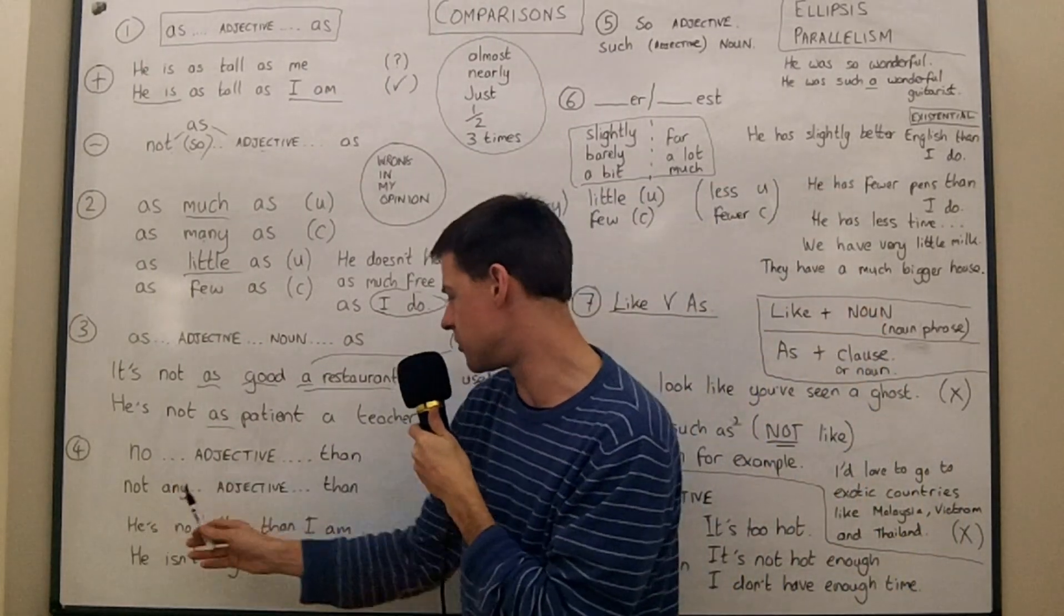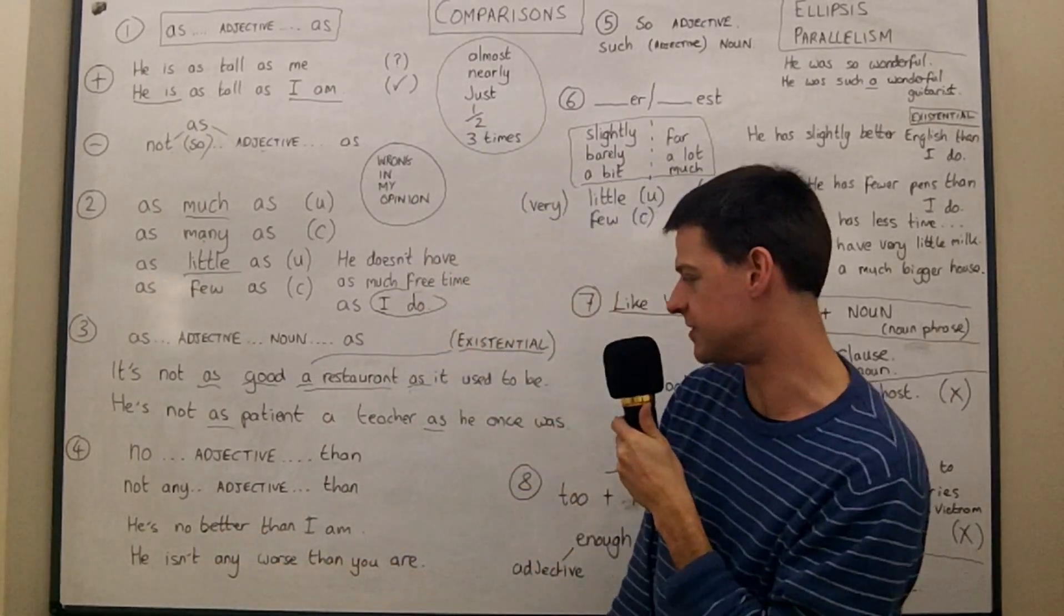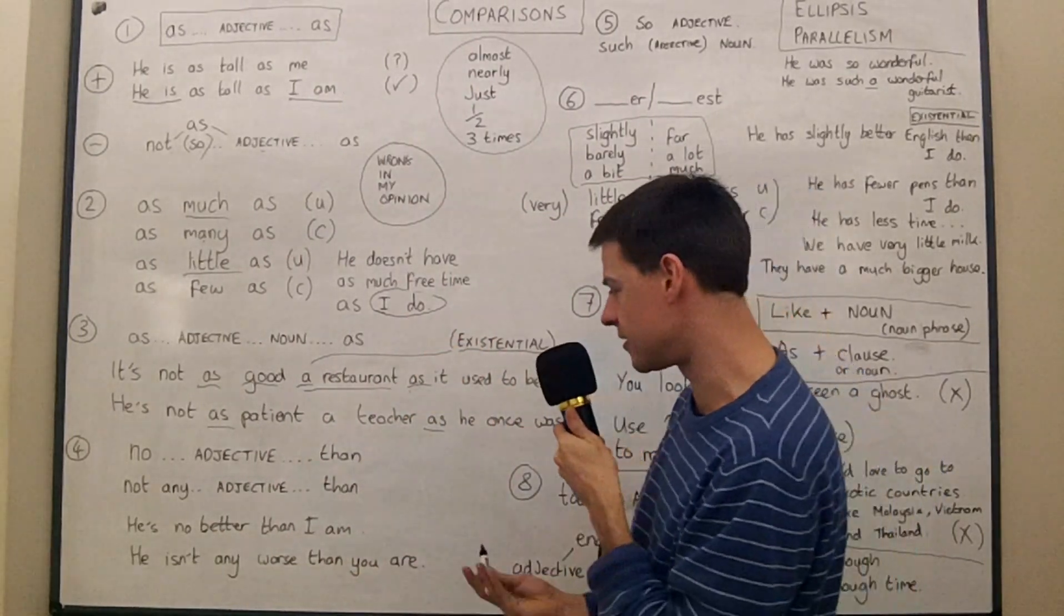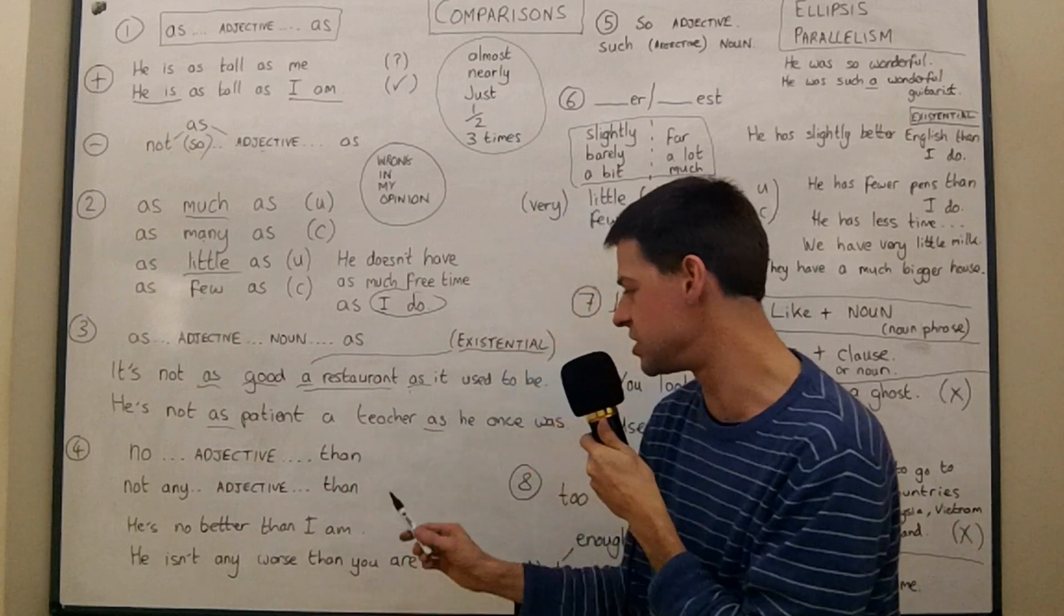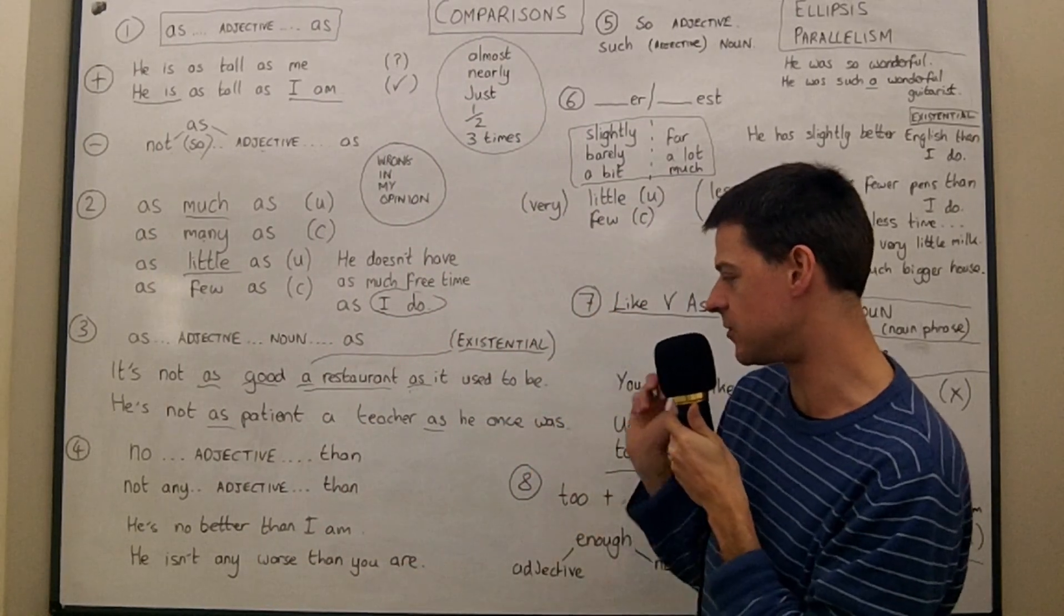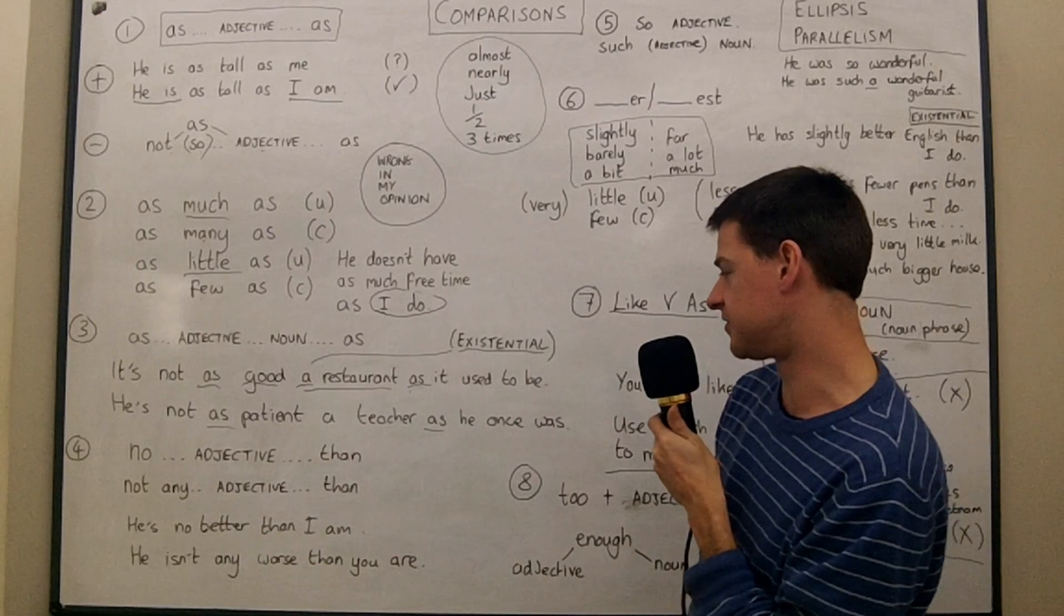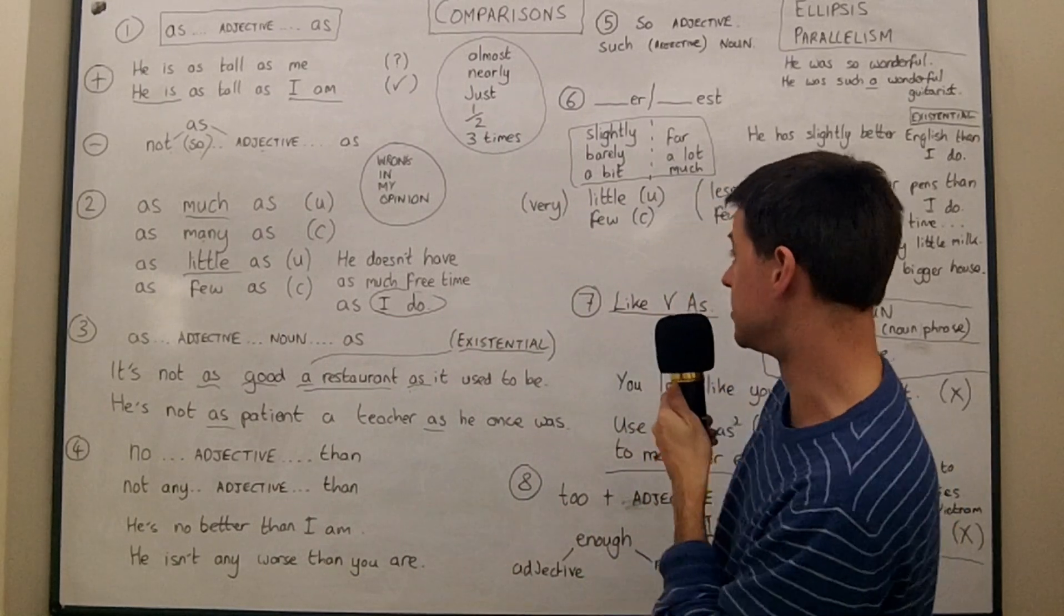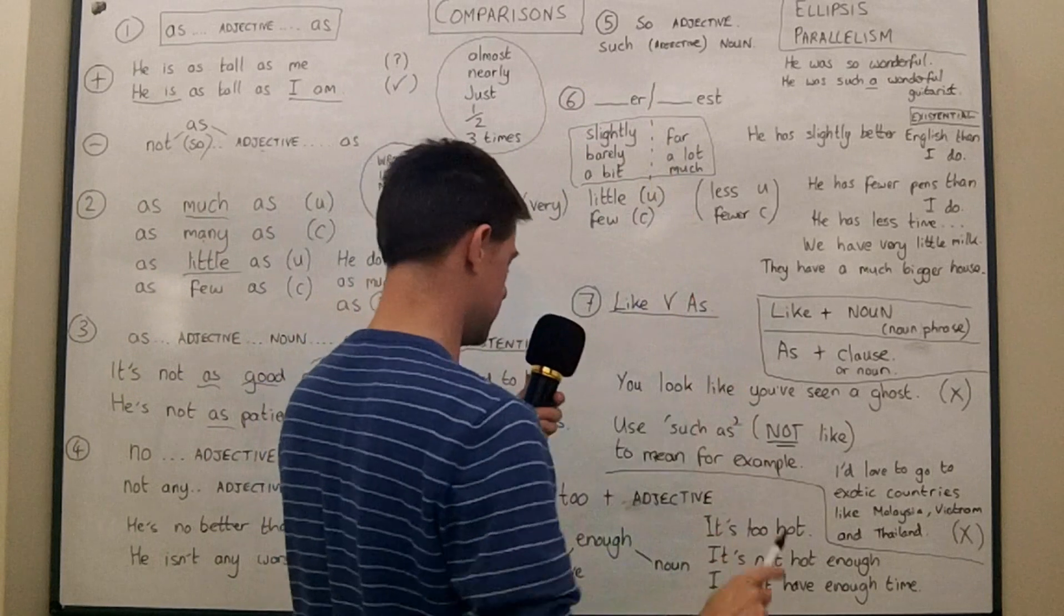OK, we can also say no adjective than. He's no better than I am, for example. He's no better than me in informal speech. Or he's no better than I am. Or we could say he isn't any worse than you are. And again, I certainly wouldn't put so anywhere. But I suppose we're not doing as, as here. But he isn't any worse than you are. OK, now we'll come on to so and such.